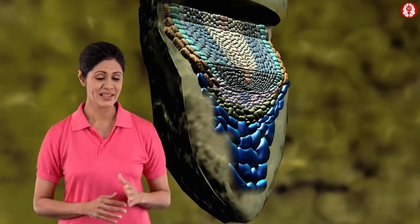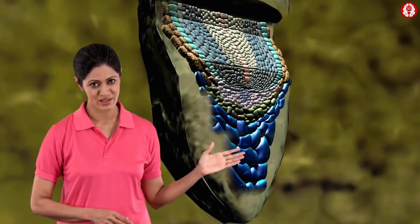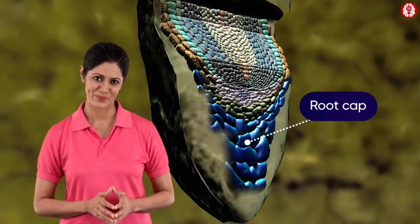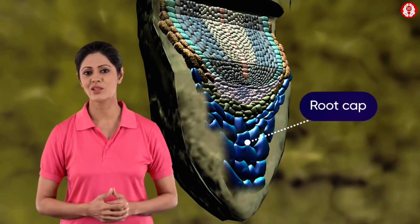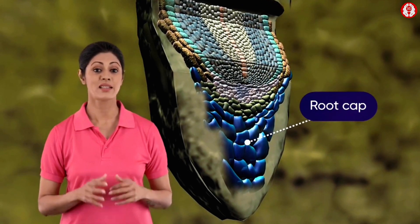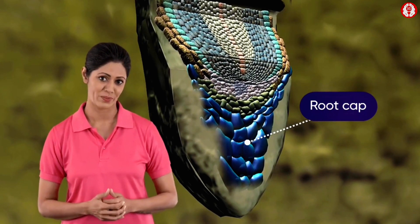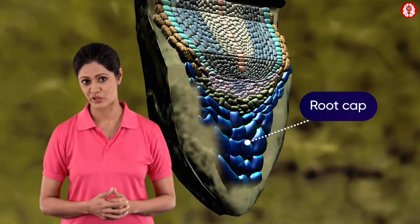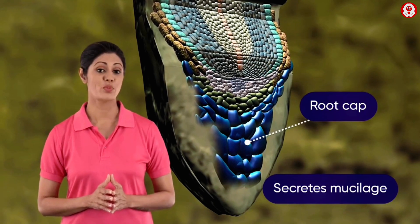If we take a longitudinal section of the root, we can see that the tender apex of the root is covered by a thimble-shaped structure called the root cap. The root cap consists of cells that slough off as the root grows into the soil, and it also secretes mucilage which prevents friction.